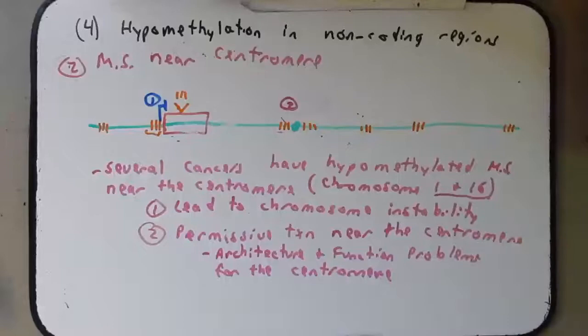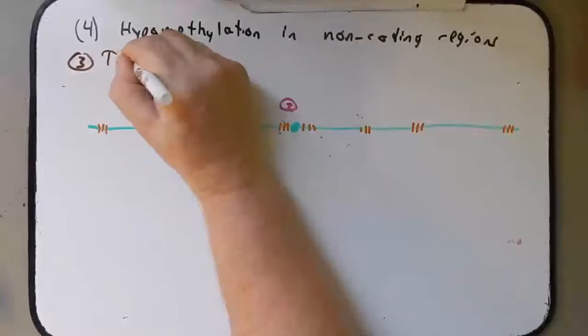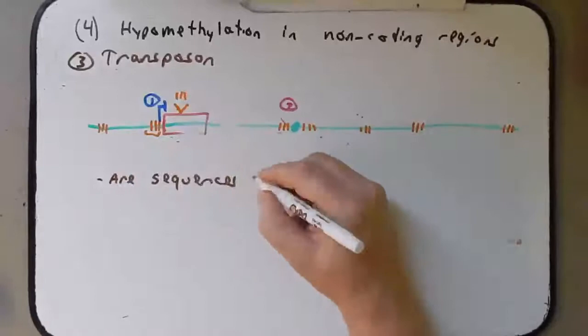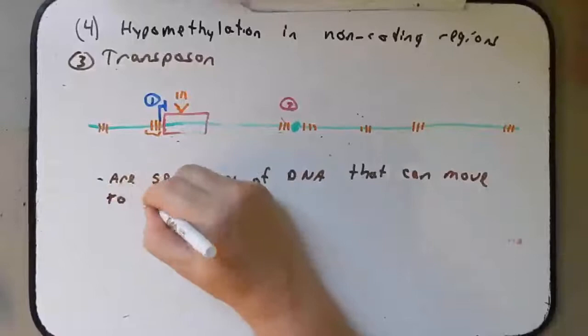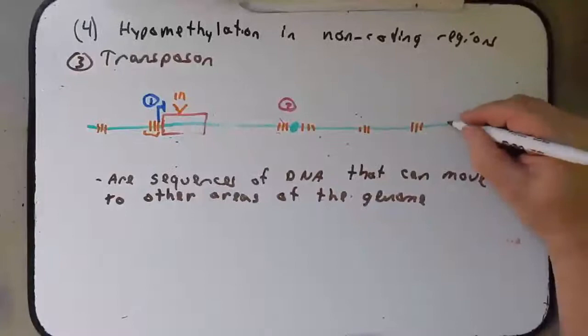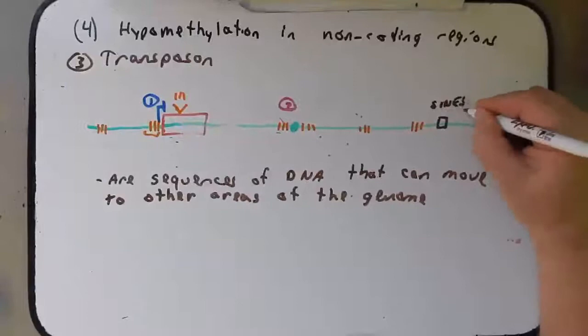The third reason has to do with something called a transposon. Transposons are sequences of DNA that can move to other areas of the genome. They can either be short sequences, in which case they are called SINEs, or they may be longer sequences, in which case they are called LINEs.